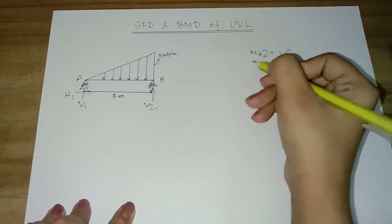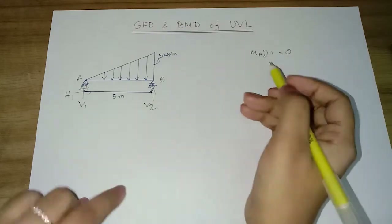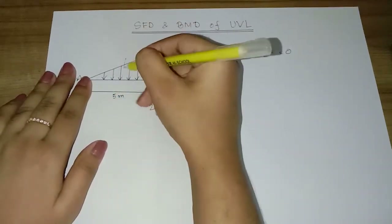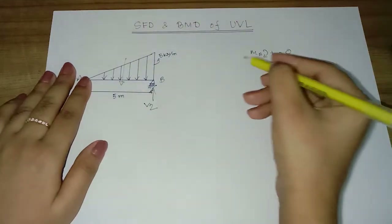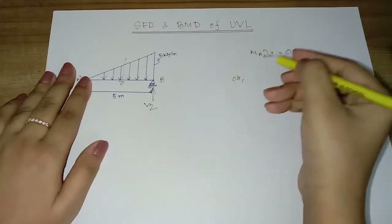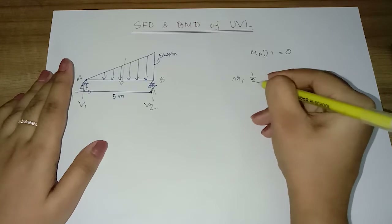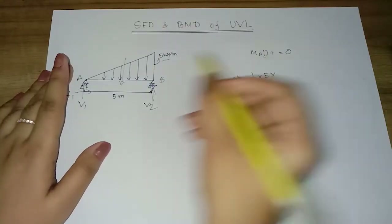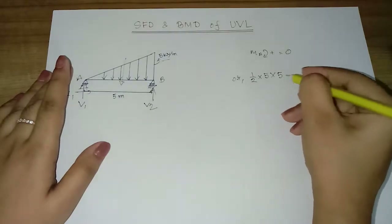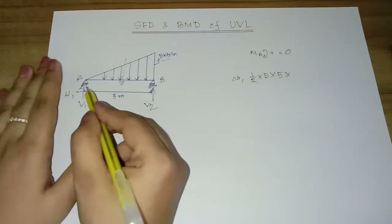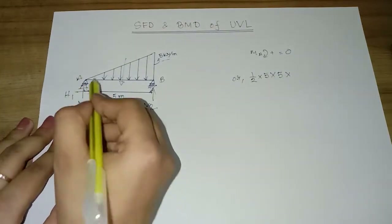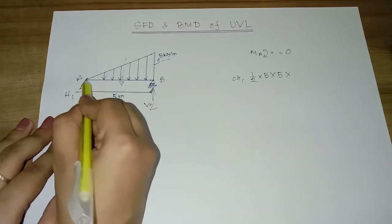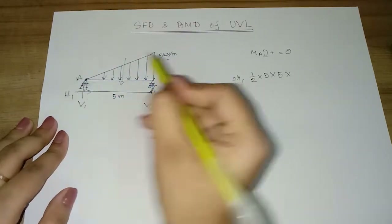Clockwise moment is positive. Taking moment about point A, the combined load of the UVL — half into 5 kN per meter into 5 — gives a resultant of 12.5 kN. For a triangular load, the resultant acts at two-thirds of the distance from the zero-load end.